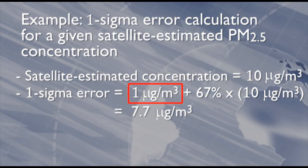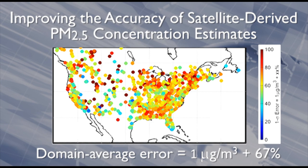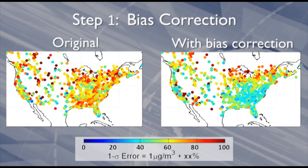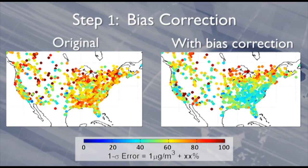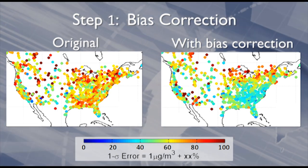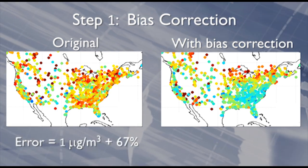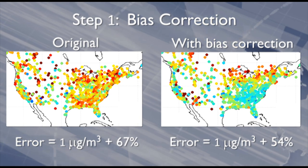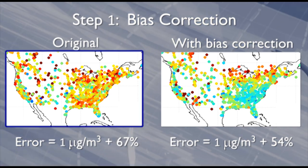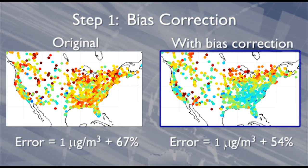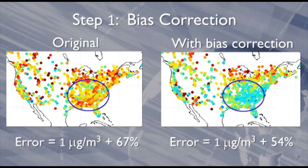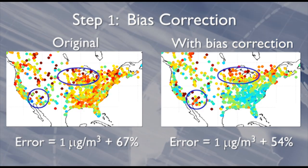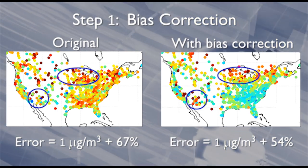The accuracy of satellite-derived PM2.5 concentrations could be improved by doing two things. First, a seasonal bias correction was applied to satellite estimates using nationwide ground observations over a running 90-day window. Applying a bias correction reduced the three-year average one sigma error from 1 microgram per cubic meter plus 67% to 1 microgram per cubic meter plus 54%. The bias in the eastern US was particularly reduced. However, where in-situ monitoring is sparse, across the northern Great Lakes and portions of the western US, biases remained high.